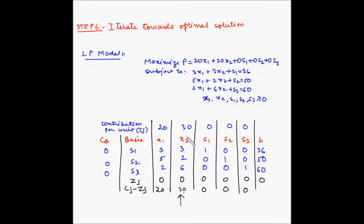The variable in that column is the entering variable and this column will become our key column. In case we had two columns with the same value of Cj minus Zj, then we can choose any one arbitrarily.